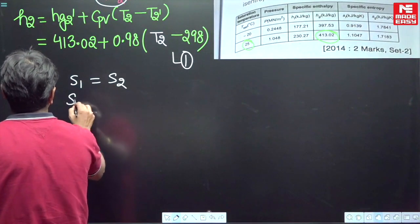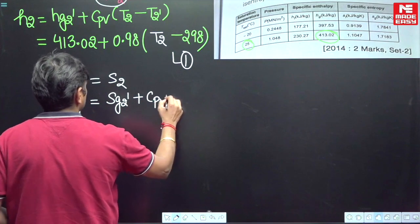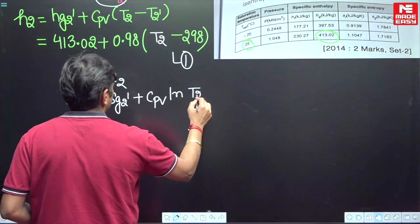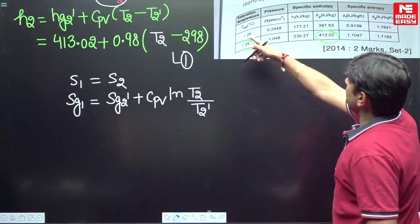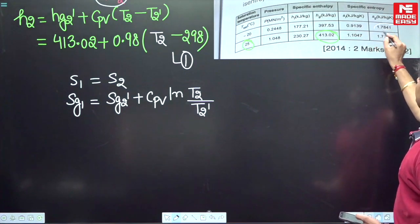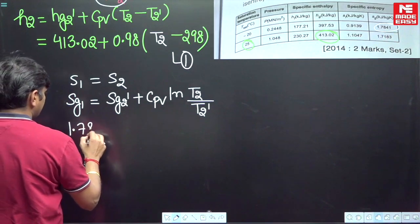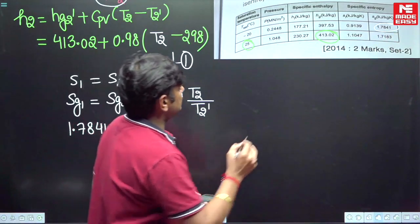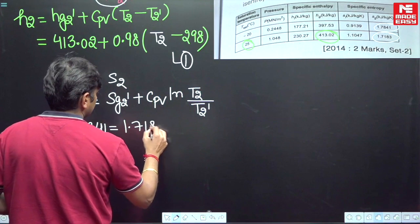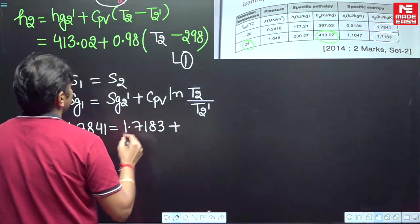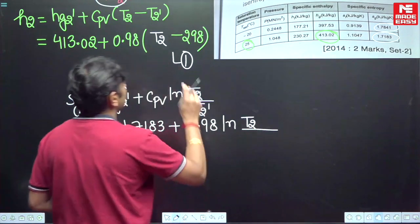So now we will use S1 is equal to S2. The point 1 is in saturated vapor, 2 is in superheated region. So SG2 dash plus CP of vapor ln T2 upon T2 dash. So the point 1 is corresponding to minus 20, SG this is the value 1.7841 and this is the value corresponding to 25 degrees Celsius, 1.7183.